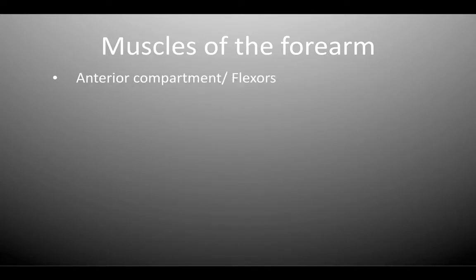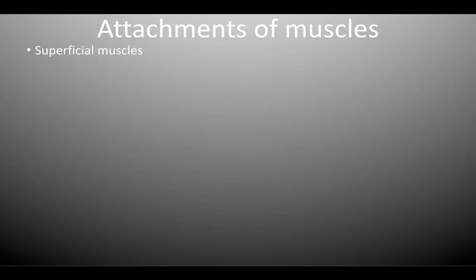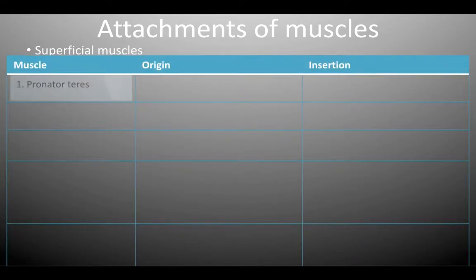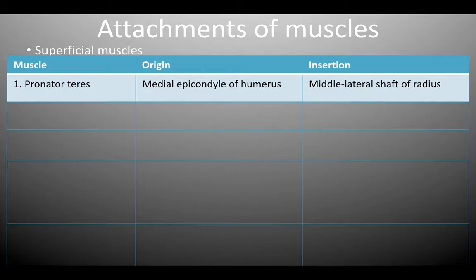The muscles of the forearm are divided into two main groups: the anterior compartment or flexors, and the posterior compartment or extensors. These compartments are further subdivided into a superficial layer and a deep layer of muscles. In the superficial layer of the anterior compartment, we have the pronator teres originating from the medial epicondyle of the humerus, inserting into the middle lateral shaft of the radius.